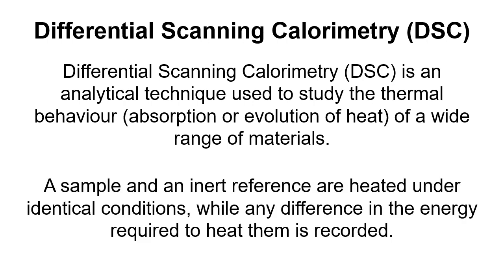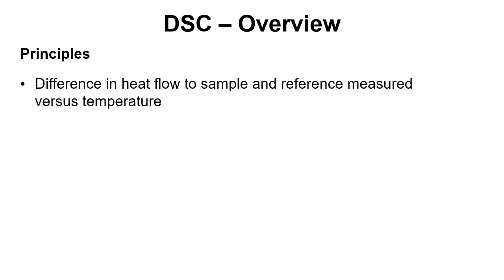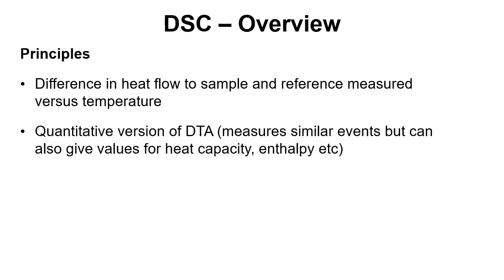A sample and an inert reference are heated up under identical conditions and any difference in the energy required to heat them is recorded. The basic principle is that we're monitoring the difference in heat flow to a sample and reference versus temperature. It can be thought of as a quantitative version of a DTA — it measures very similar events but can also give values for enthalpy and heat capacity, so it gives the energy associated with different thermal events. DTA can only tell you the temperatures at which events are occurring, whereas DSC gives you the energy associated with them.